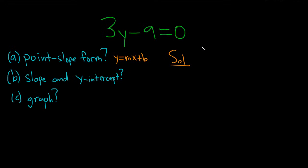Solution. I'm going to go ahead and write down the original question again, so we have 3y minus 9 equals 0. And so part A wants us to write it in this way, so basically that means we have to solve for y.